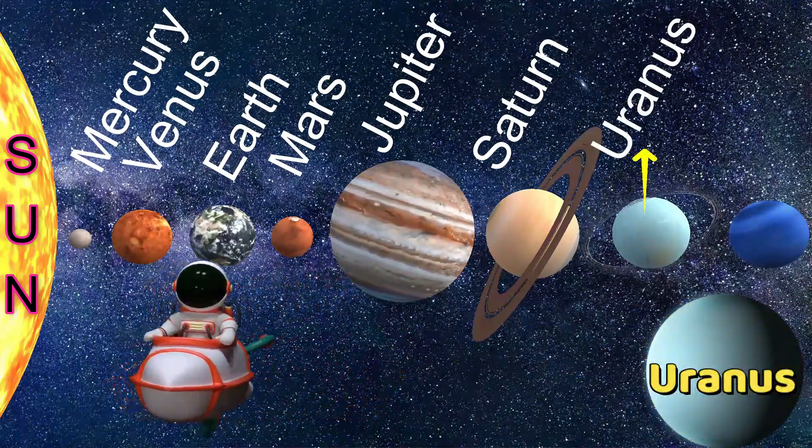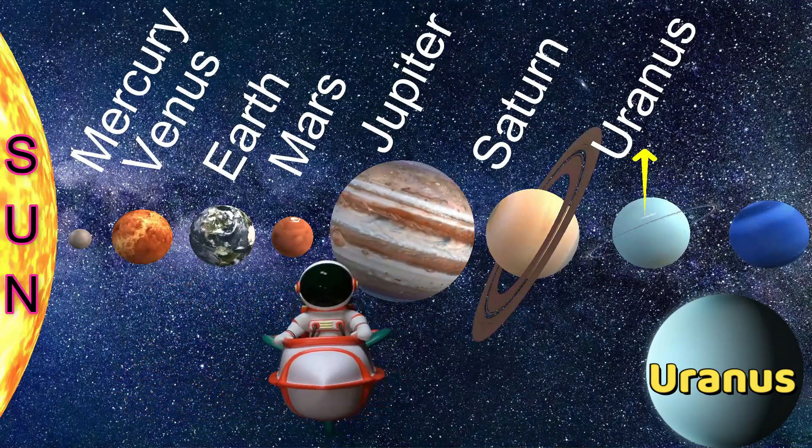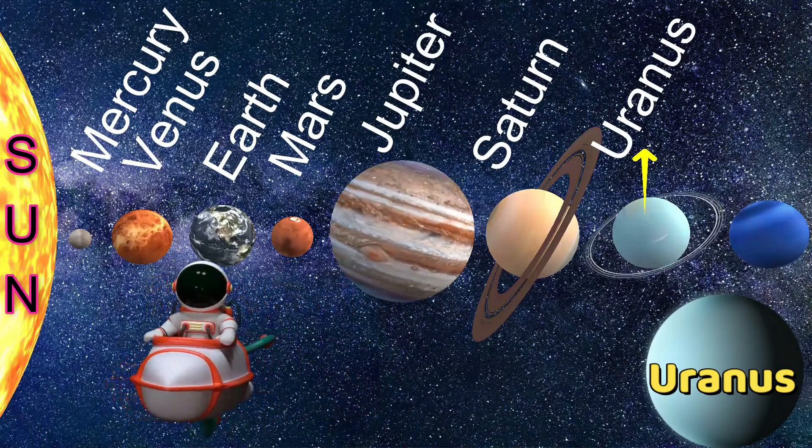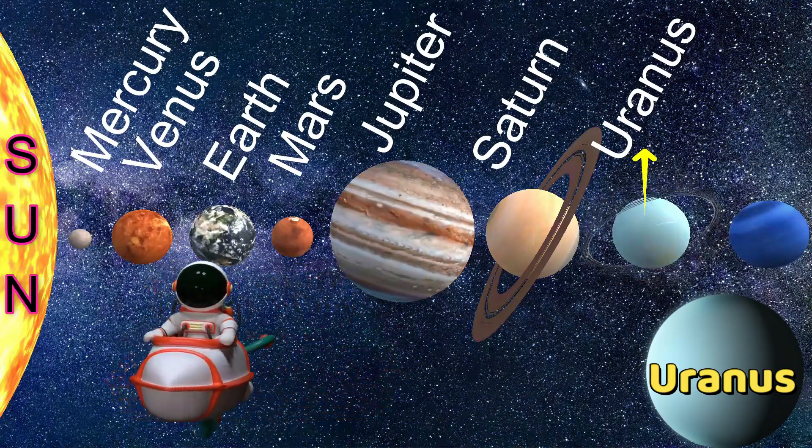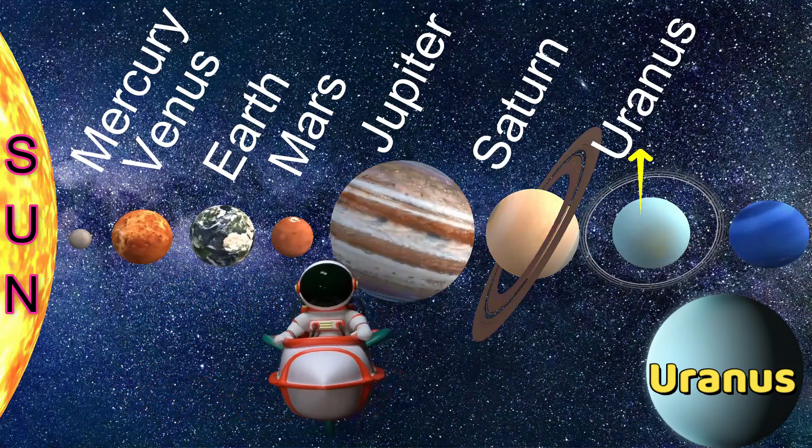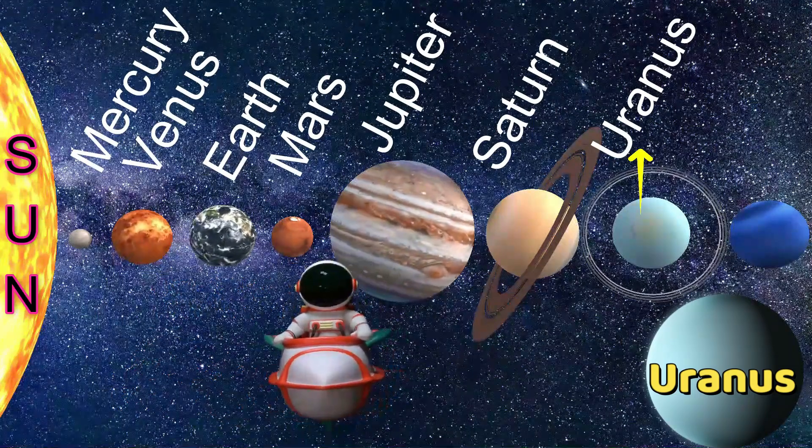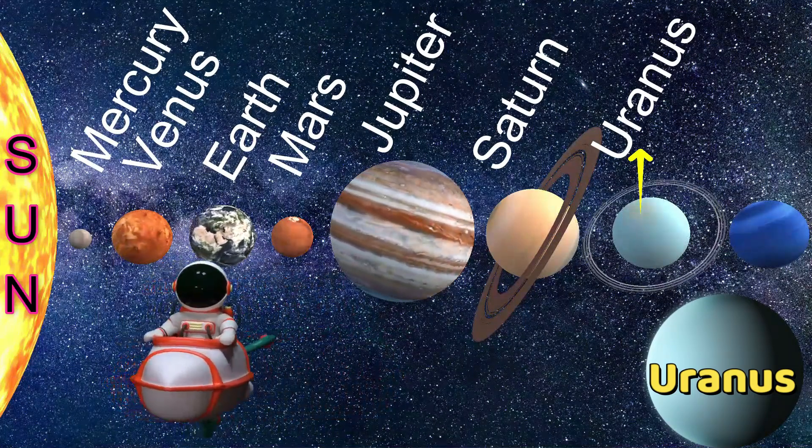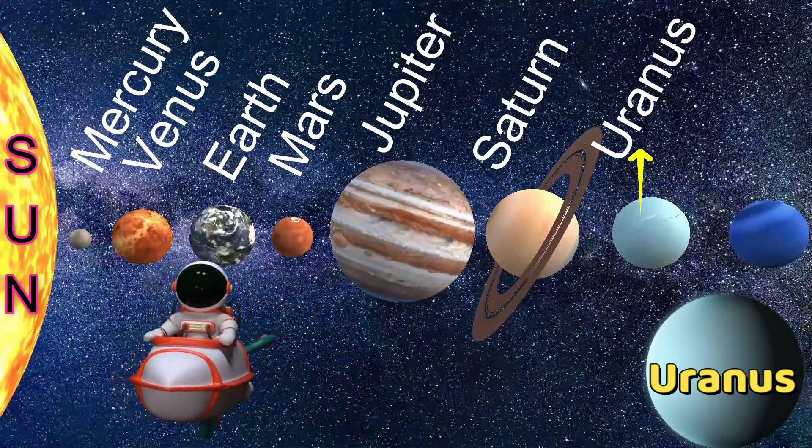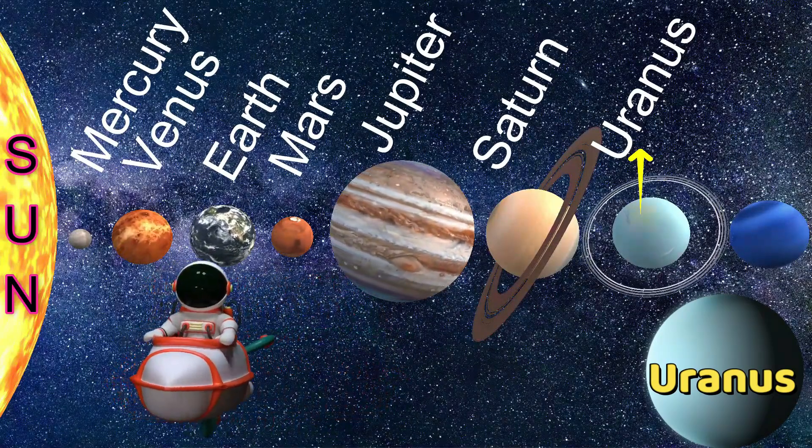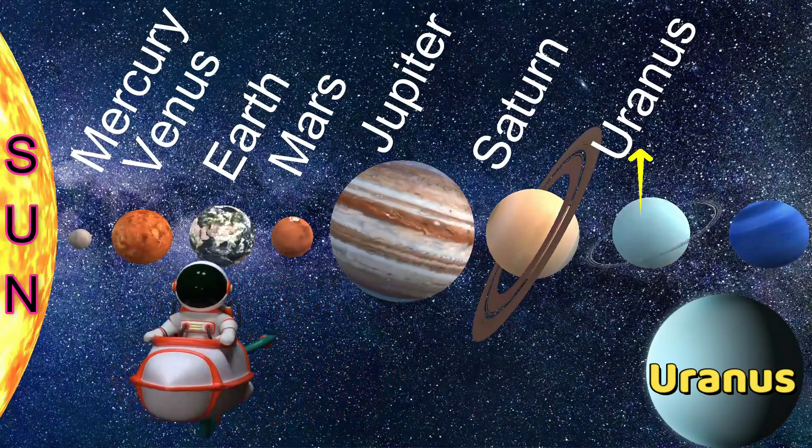Next planet, Uranus, which has the third largest planetary radius and fourth largest planetary mass in the solar system. It is green color. This is known as ice giant because it has the coldest planetary atmosphere in the solar system. This has 27 moons, friends.